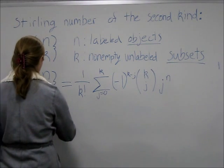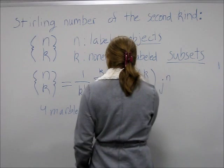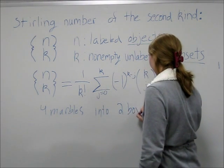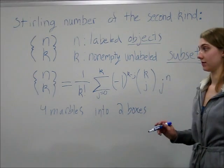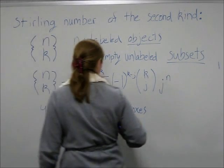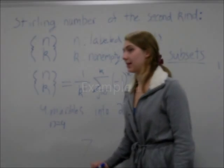For example, if we have four marbles into two boxes where the marbles are different and the boxes are the same, then we have that n equals 4 and k equals 2, and the result is 7.